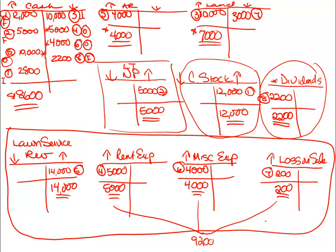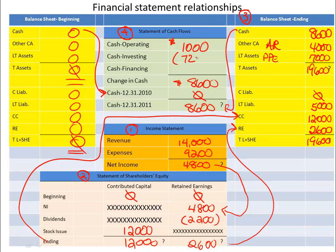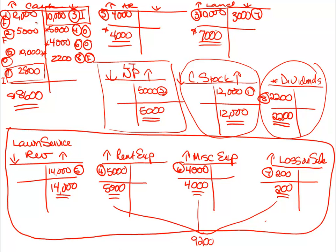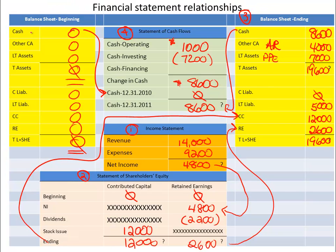For investing activities: cash inflow was $2,800 and cash outflow was $10,000, giving a net cash outflow of $7,200 — shown in brackets since more cash flowed out than in. For financing activities: cash inflows were $12,000 and $5,000, totaling $17,000, minus $2,200 paid out in dividends, for a net cash inflow from financing of $14,800.